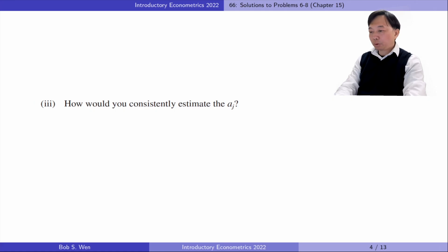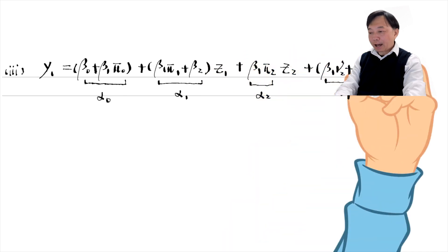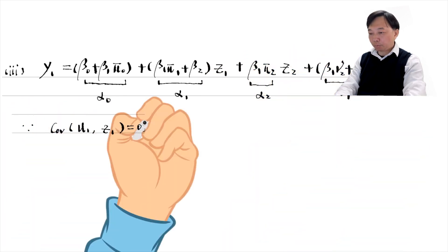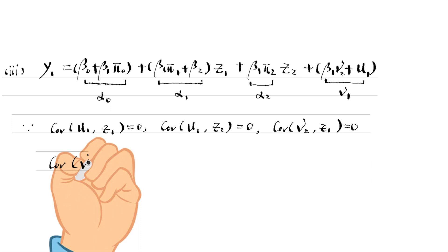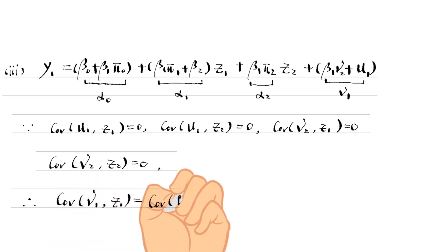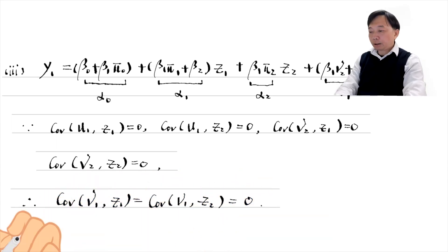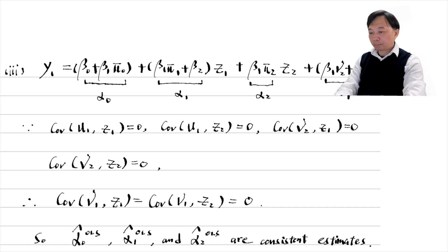In part 3, how would we consistently estimate the alphas? Looking at the reduced form equation for y1, we can show that the error term mu1 is uncorrelated with the explanatory variables z1 and z2. So the OLS estimates for alpha 0, alpha 1, and alpha 2 are consistent. That is, we regress y1 on z1 and z2 by OLS, and the estimated coefficients are consistent.